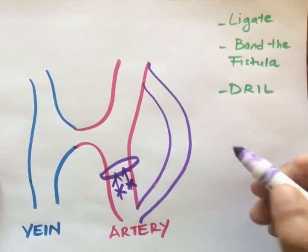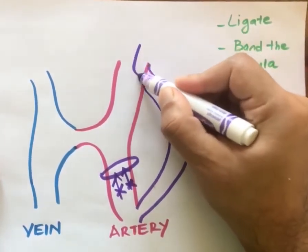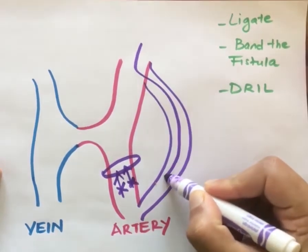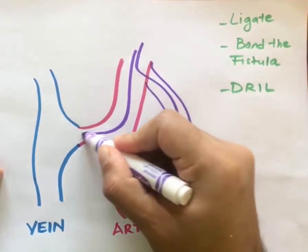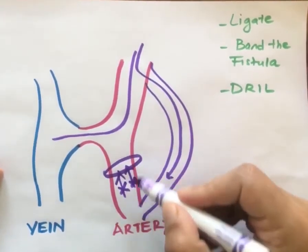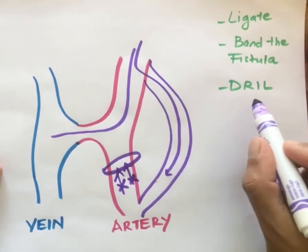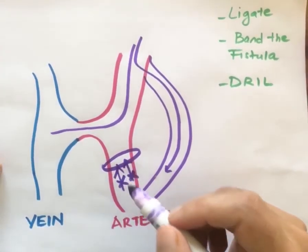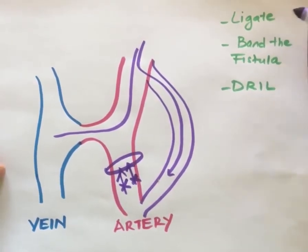Now the blood goes from the upper extremity to the hand through this revascularization pathway. The other component of blood flows to the fistula through this pathway, and there is no backflow. By doing DRIL, we reduce the blood flow to the fistula by 25%.